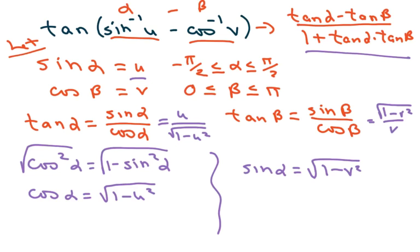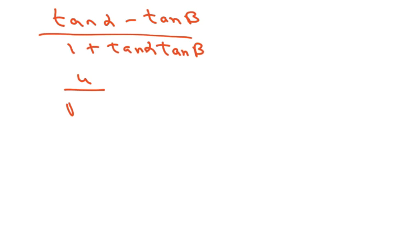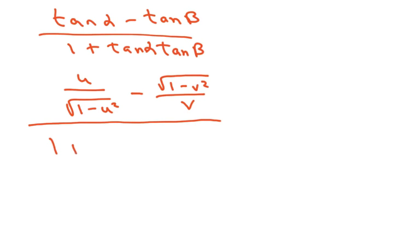Now I'll fill in the formula. We have tan(α) minus tan(β) over 1 plus tan(α) times tan(β). Substituting in, the numerator becomes u over √(1 - u²) minus √(1 - v²) over v, and the denominator becomes 1 plus u over √(1 - u²) times √(1 - v²) over v. From here it becomes a matter of algebra.